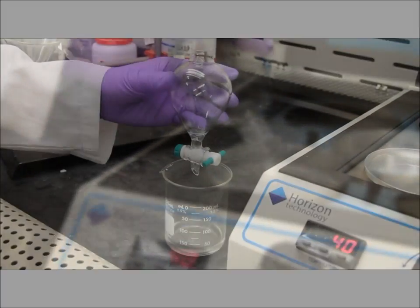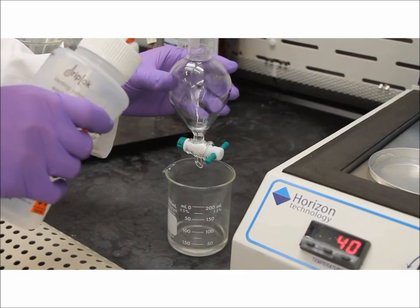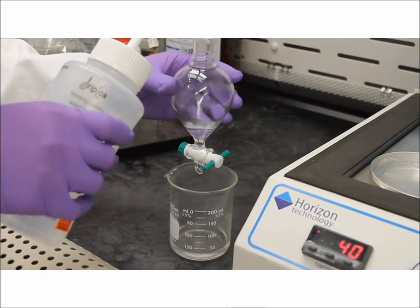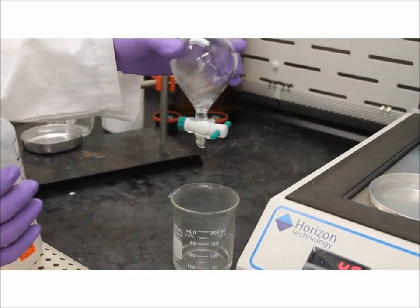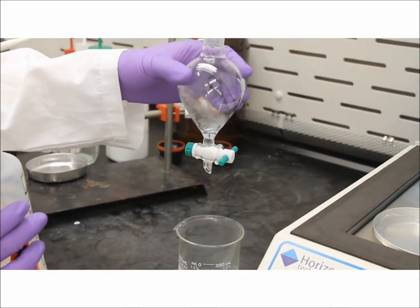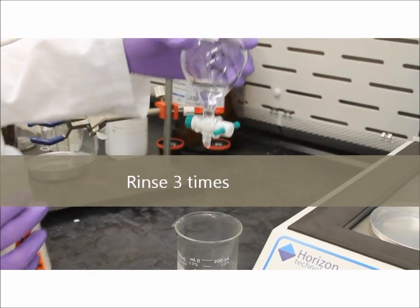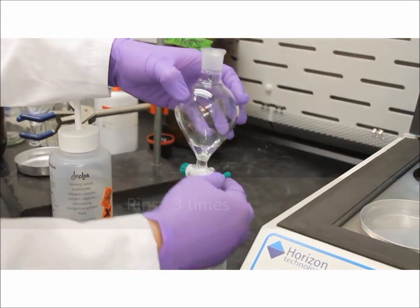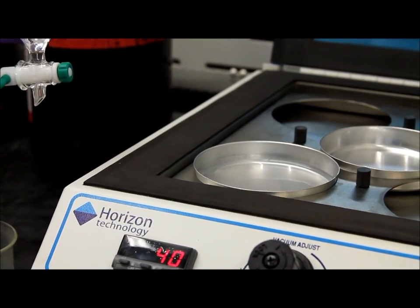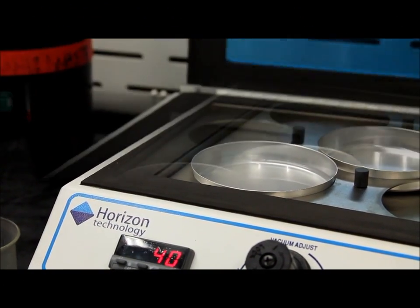Now rinse the collection vessel with a small amount of solvent and swirl it around to capture all of the compounds to achieve the highest recoveries. Remove the excess water from the bottom. Pour this now into the pre-weighed pan and repeat. You want to make sure that no excess water is poured into the pre-weighed pan.